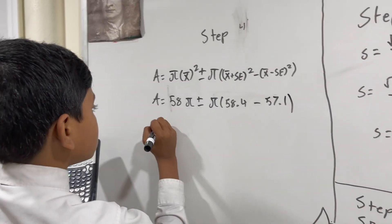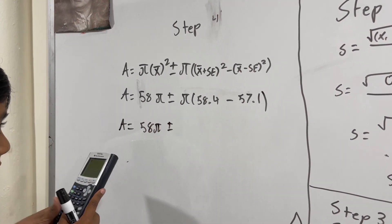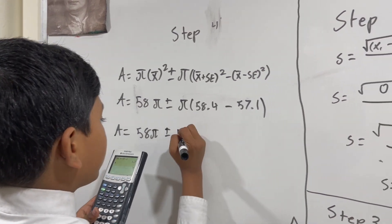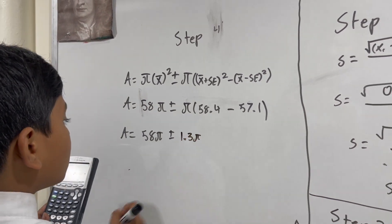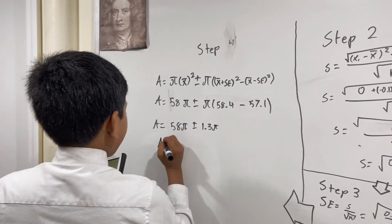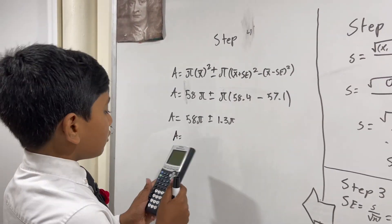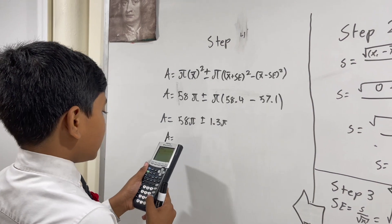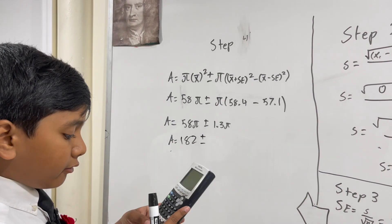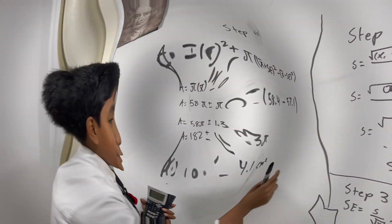All right, so that gives us 58 pi plus minus 58.4 minus 57.1 is 1.3 pi. All right, so we've got our answer, but if you're not a fancy guy and you don't like these pies, then you can just multiply 58 by pi to give you 182, and then you can multiply 1.3 by pi to get you 4.